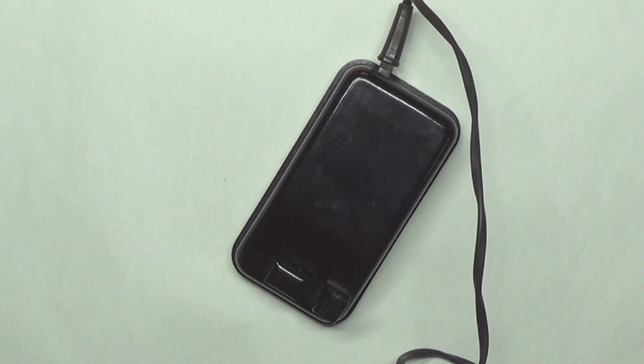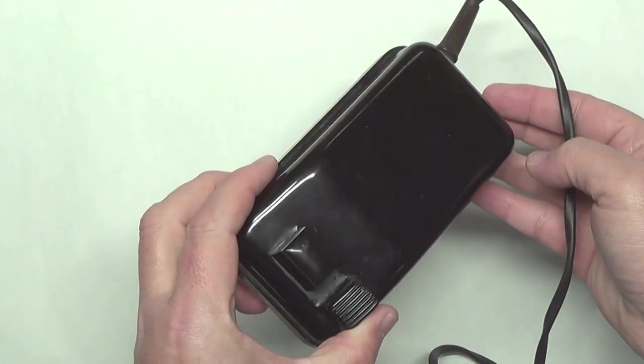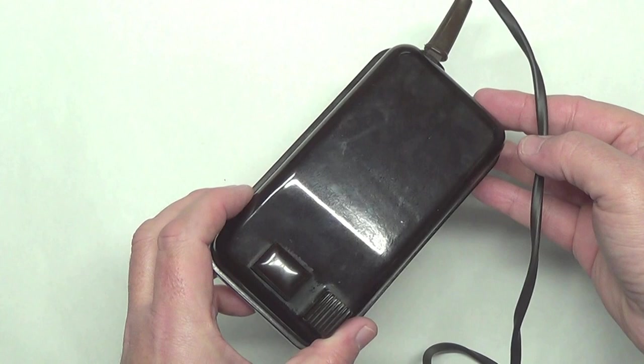Vintage sewing machine foot pedals or controllers were often made from Bakelite. This early form of plastic can look tired and grubby, but it's easy to put a like-new shine on it.